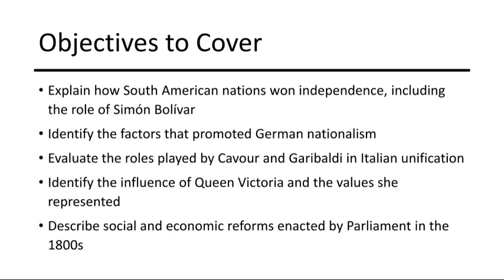Finally, the British Parliament was a crucible of social and economic reform, responding to the challenges of industrialization, where the industrial revolution began. Parliament enacted transformative measures including factory regulations, labor reforms, and the expansion of voting rights. These reforms aimed to address the social inequalities arising from rapid industrialization and to lay the foundations for a more equitable society.